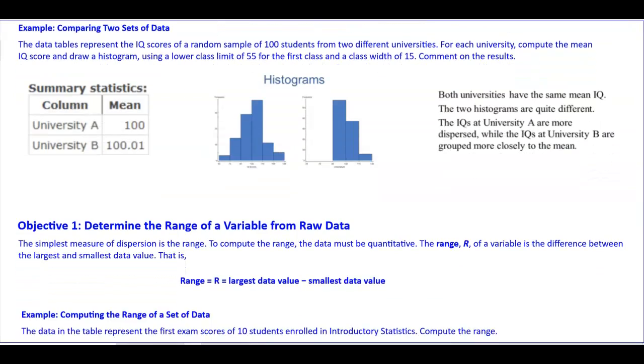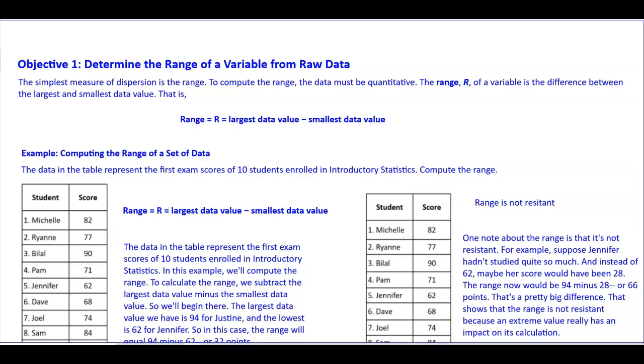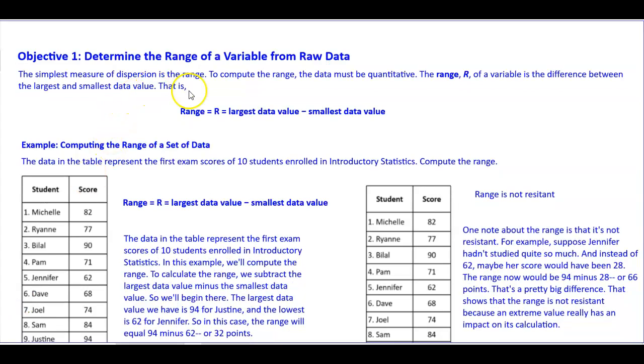Now objective number one, we want to determine the range of a variable from raw data. The simplest measure of dispersion is the range. To compute the range, the data must be quantitative. The range r of a variable is the difference between the largest and smallest data value. That is, the range is equal to r, which is equal to the largest data value minus the smallest data value.